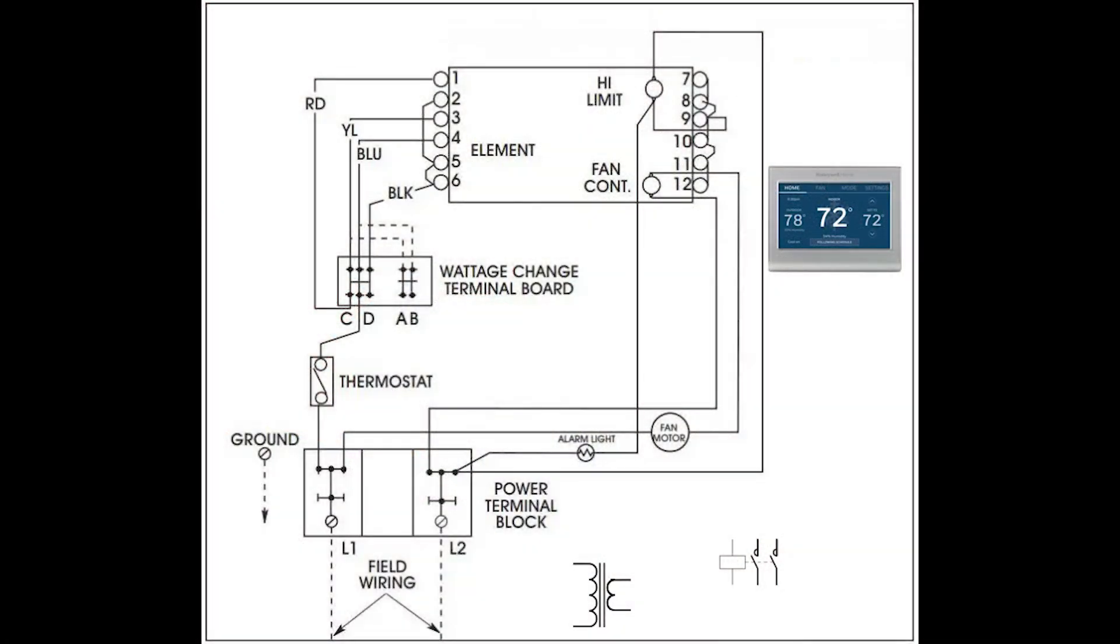First things first, remove the original thermostat from the circuit. Next, we'll wire in the transformer, primary side to the field wiring lugs. One of the 24 volts secondary lines will go directly to one side of the coil in the contactor. The other side of the 24 volts will connect directly to the R terminal of the new thermostat.